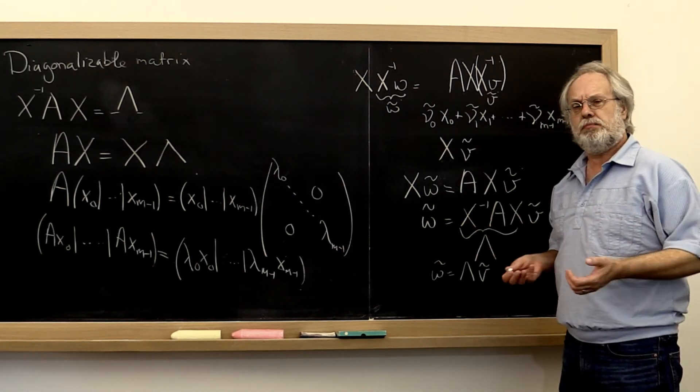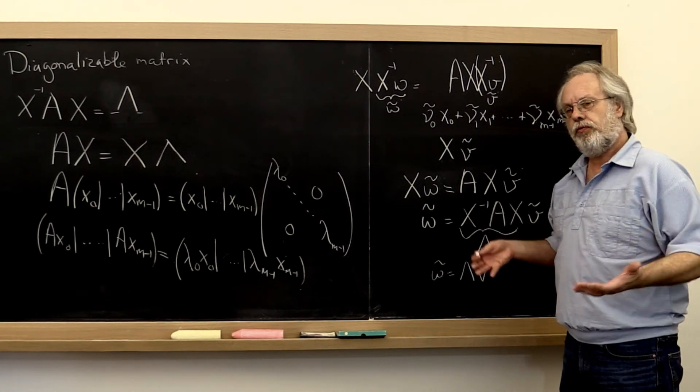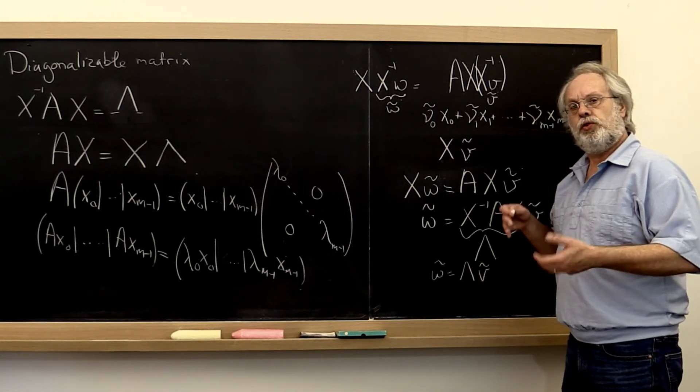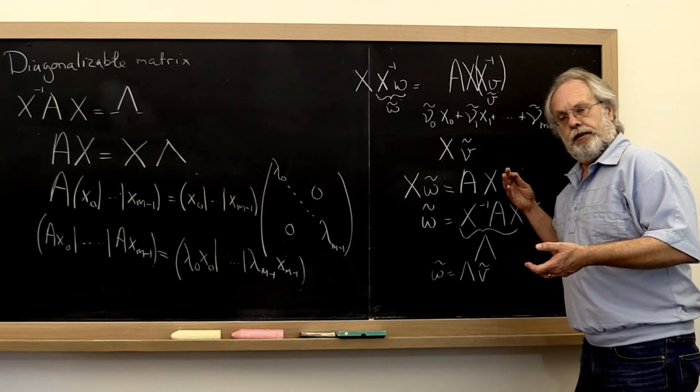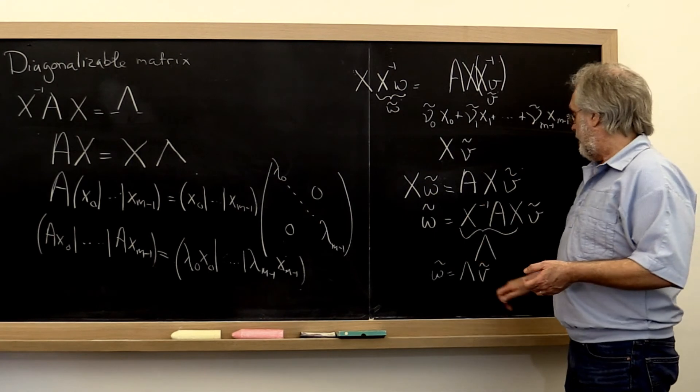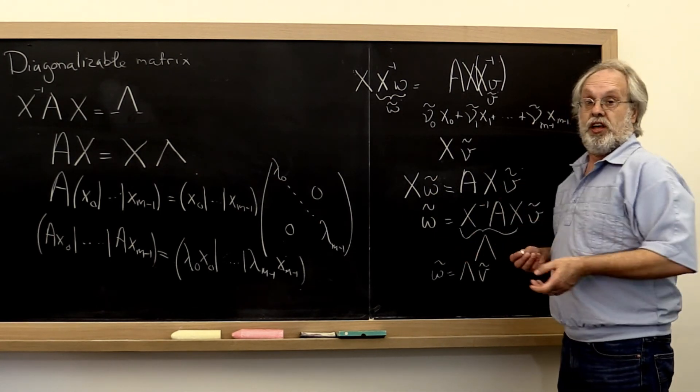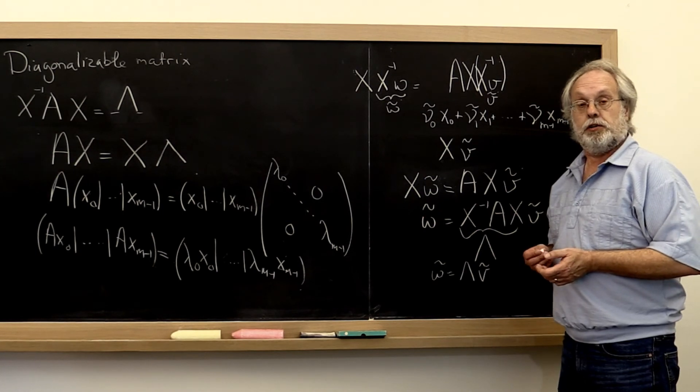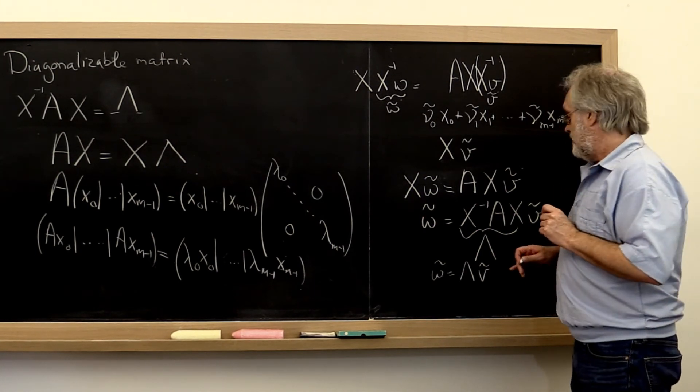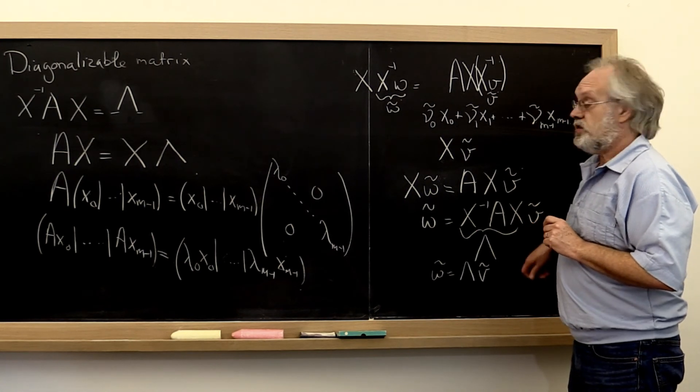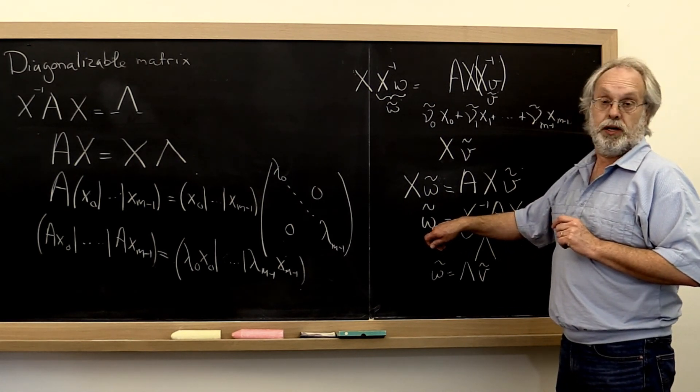Where have we seen this before? We saw this before when we talked about the singular value decomposition and how if you viewed the vector w and the vector v in the right basis, then you ended up with a diagonal matrix that was multiplying. The difference here is that there the basis that you viewed v in was different from the basis that you viewed w in.